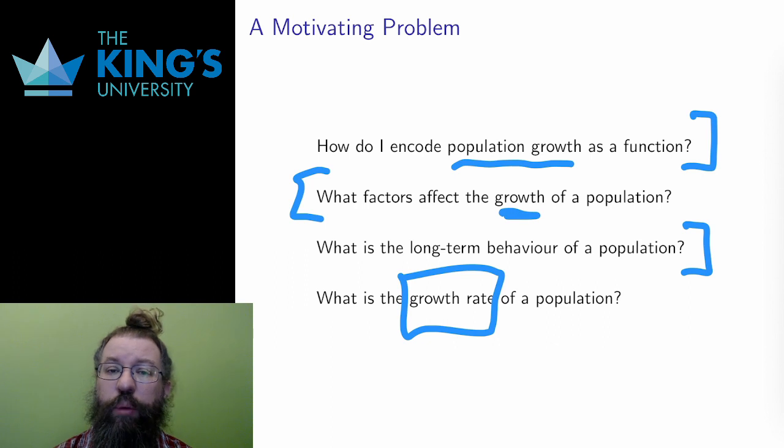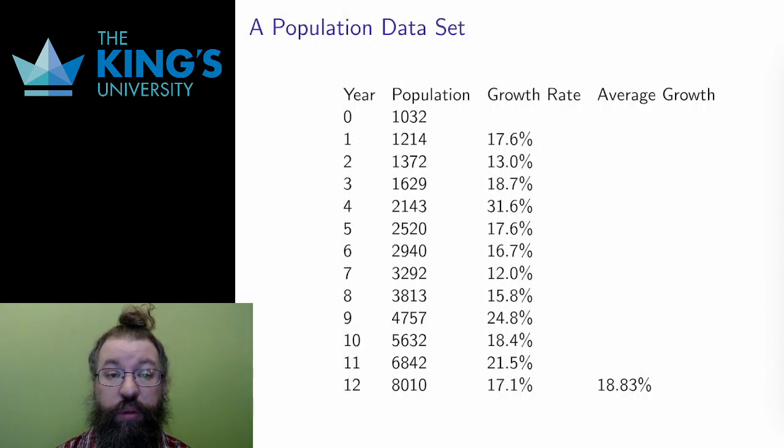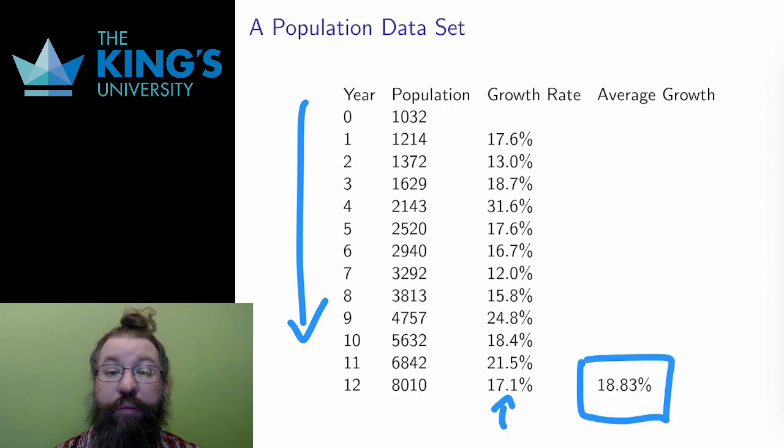For now, I want to start with regression and percentage growth. I want to consider a data set for a population year-by-year. With this data, I've calculated the percentage growth from year-to-year. I've also calculated the averages of those 12 percentage growth rates. This gives me an idea of how the population behaves.